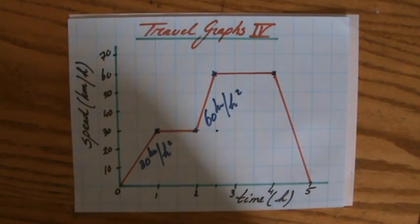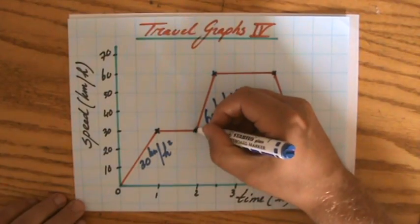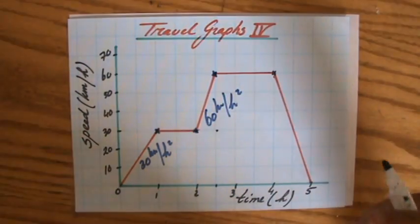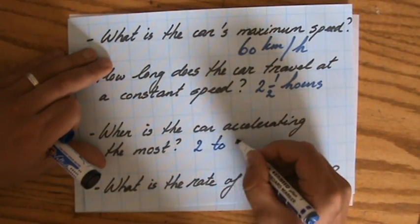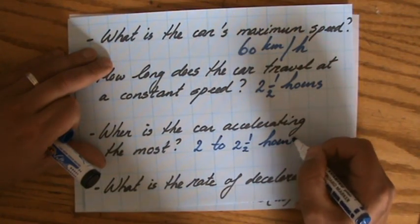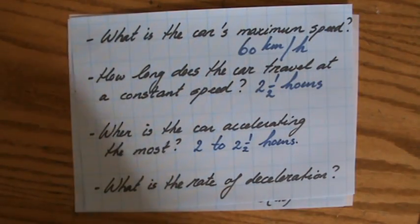So if the question is when is the car accelerating the most, that is from two to two and a half hours. In that period of time, the car is accelerating the most, and that's because the line is steepest.